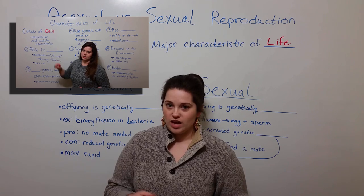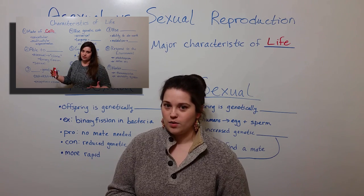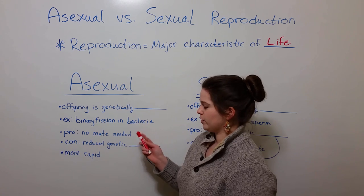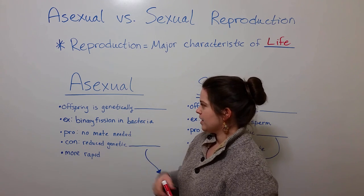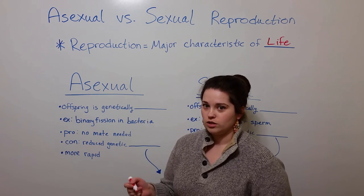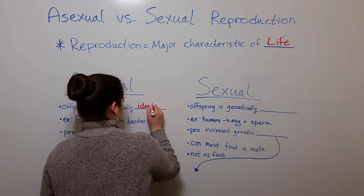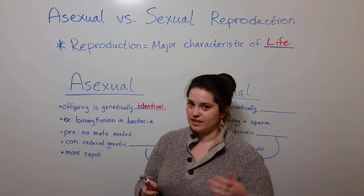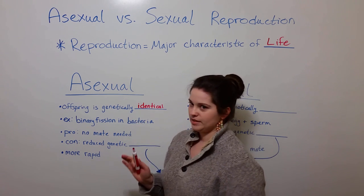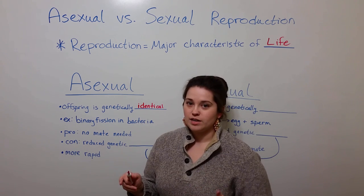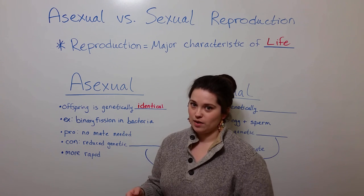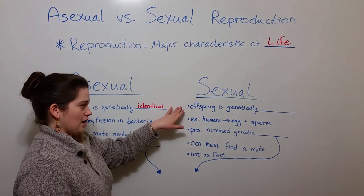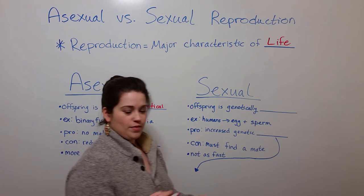If you are interested in learning about some of the other major characteristics of life, see my video on that topic. Now let's talk about asexual reproduction first. Asexual reproduction is characterized by offspring that are genetically identical to the parents. This is in contrast to sexual reproduction, where offspring are genetically different from their parents.